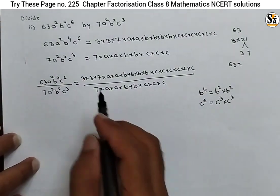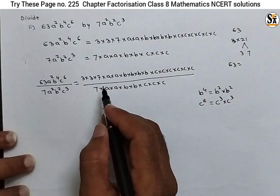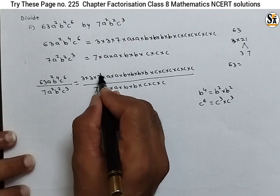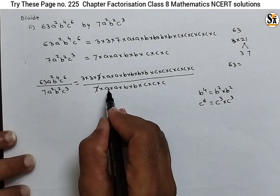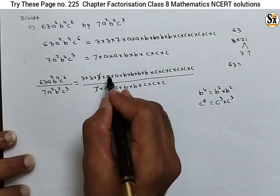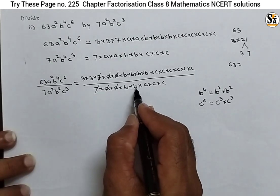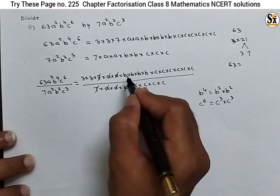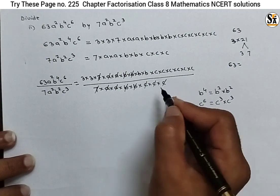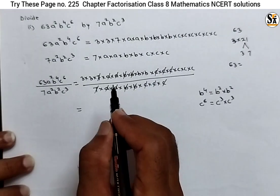Now cancel the common factors. The 7 is common — cancel 7 and 7. The a's: there are 2 a's in both, so a² and a² cancel. Now b: there are 2 b's in the denominator and 4 b's in the numerator — cancel two b's. And there are 3 c's in the denominator, so cancel three c's from the six c's in the numerator.